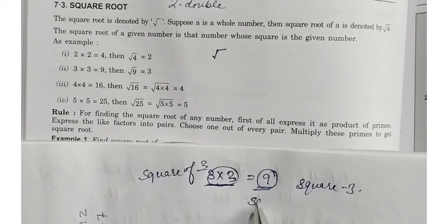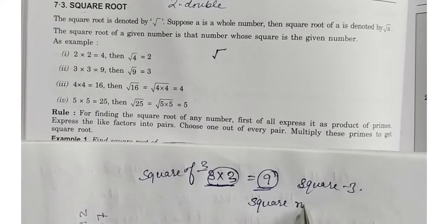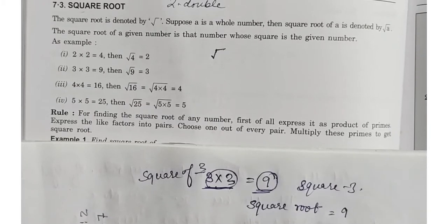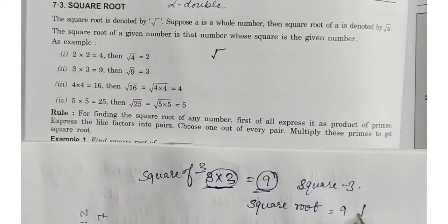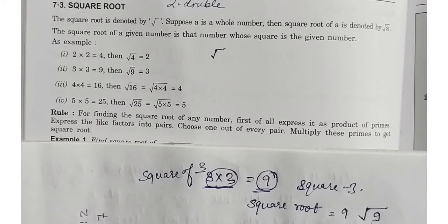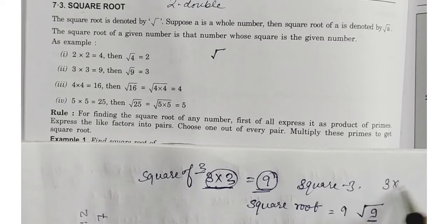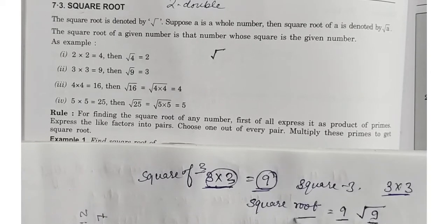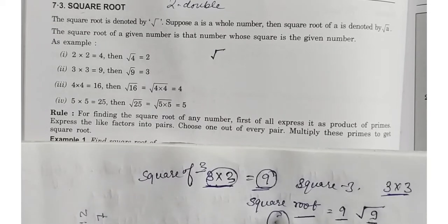اگر آپ سے کہا جائے square root کیا ہوتا ہے؟ تو square root ہم تب کہتے ہیں — suppose we have 9، اور آپ کو بتانا ہے 9 کا square root. تو آپ اس طرح سے symbol بنا دیں گے اور اس کے اندر 9 کو لکھ دیں گے. اب آپ 9 کو دیکھیں گے کہ کتنے times میں equally break ہو رہا ہے. تو یہ 3 multiply 3 میں break ہو رہا ہے — یعنی 9 کا square root ہوگا 3. Clear?